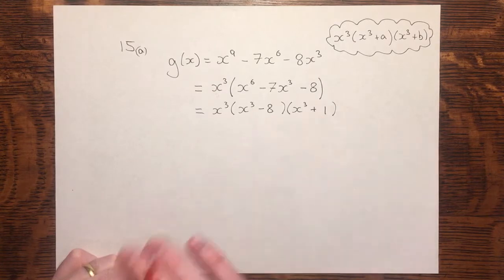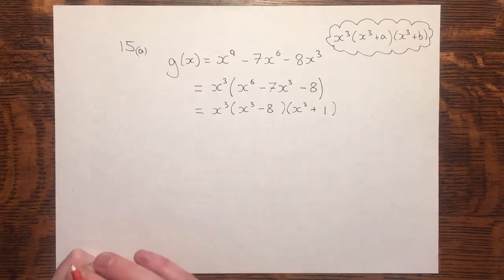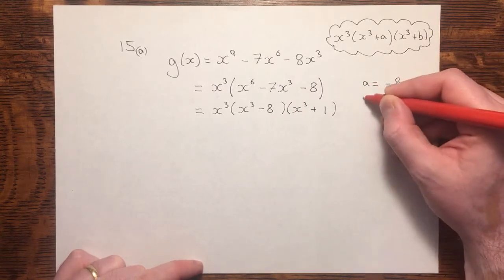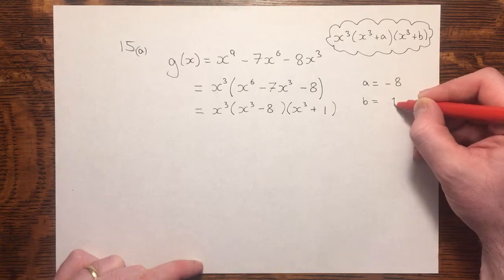If you expand that, and you might want to pause and take a moment to have a go at that, you're able to see where that came from. So we've now factorised that into the required form. I would state that a equals minus 8, and that b equals 1.